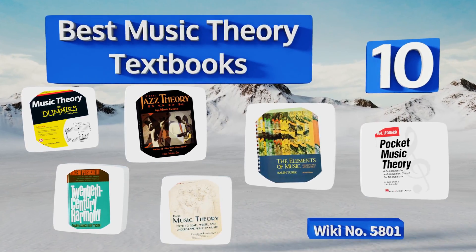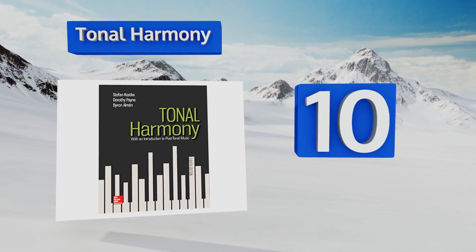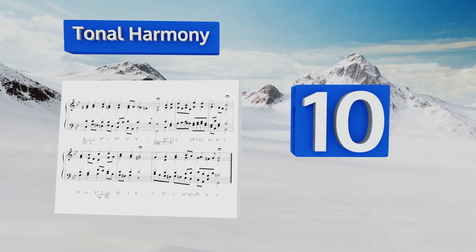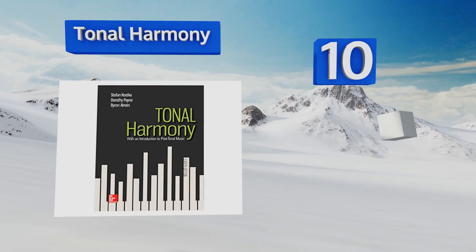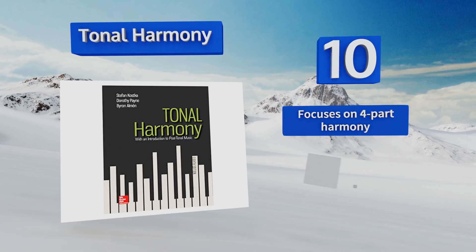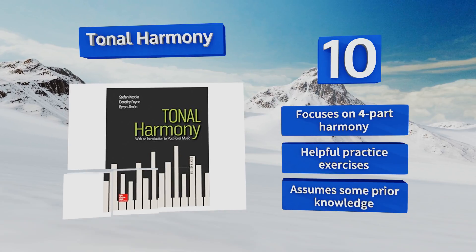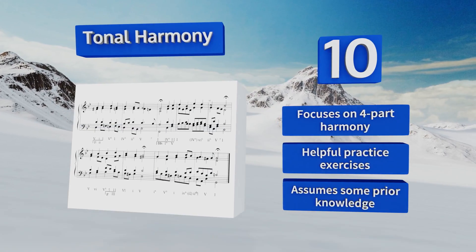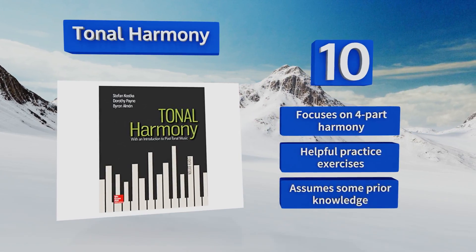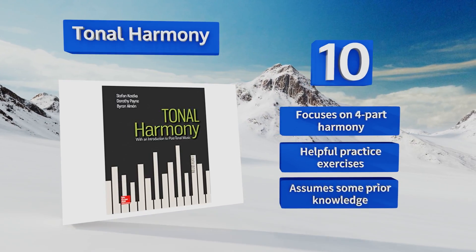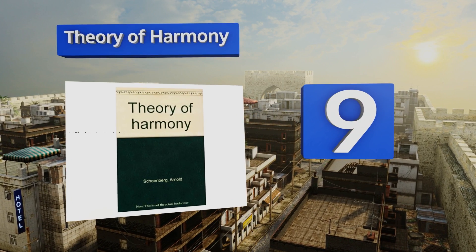Starting off our list at number 10, Stefan Kostka's Tonal Harmony rarely discusses chordal theory at all, and when it does, it often uses obscure chords that tend to perplex rather than enhance understanding. Still, it's a rich repository of musical knowledge that's otherwise organized intuitively. It focuses on four-part harmony and includes helpful practice exercises, however it does assume some prior knowledge.